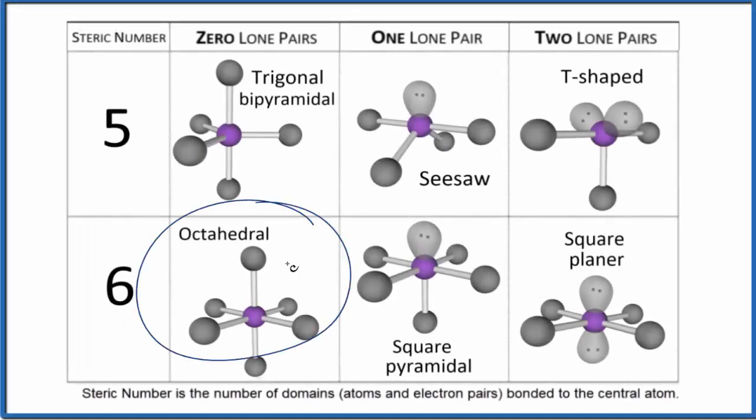Let's take a look at the octahedral molecular geometry. First off, when we think of the octahedral molecular geometry, we're thinking about a steric number of six. That means we have six things bonded to the central atom here.